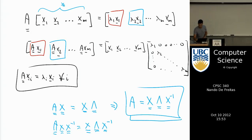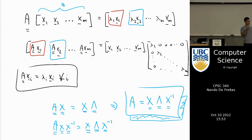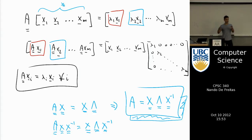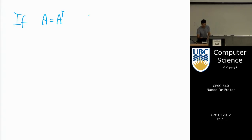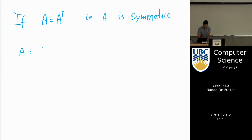This decomposition is going to be extremely important. For us going forward, A will represent images, collections of text, and so on. On the right-hand side, we decompose that matrix into all its components. We'll be using this with many practical examples — including compressing images and document databases. Finally, if A equals A transpose, meaning A is symmetric, then A can be written as...